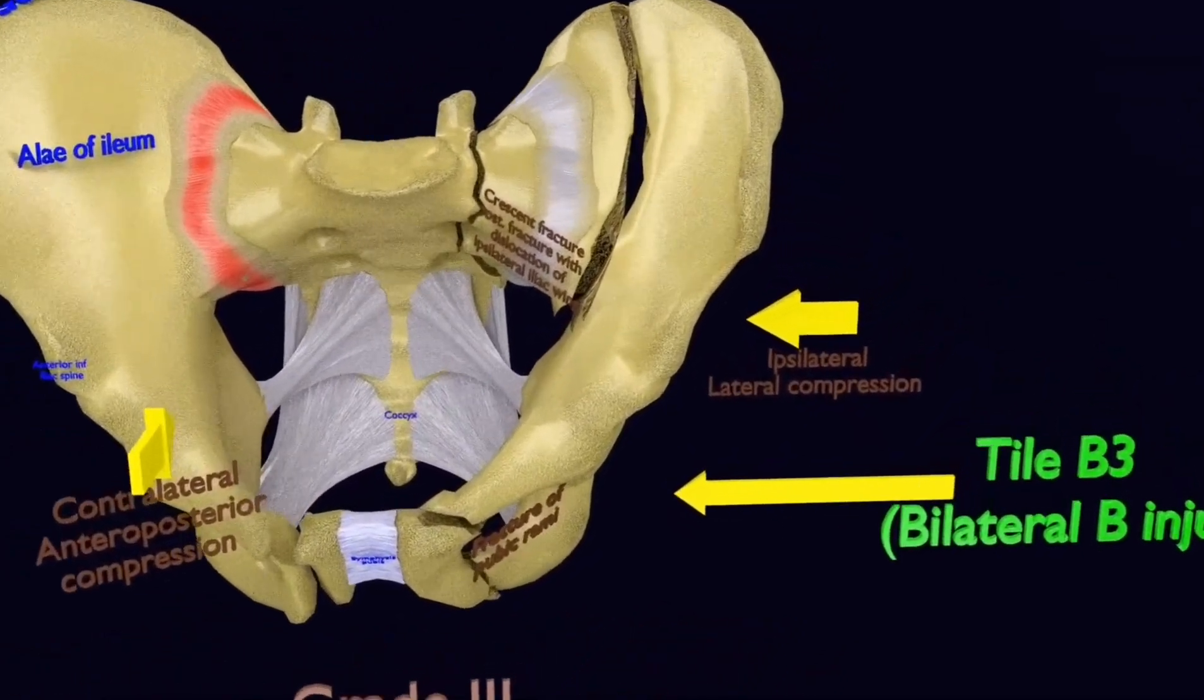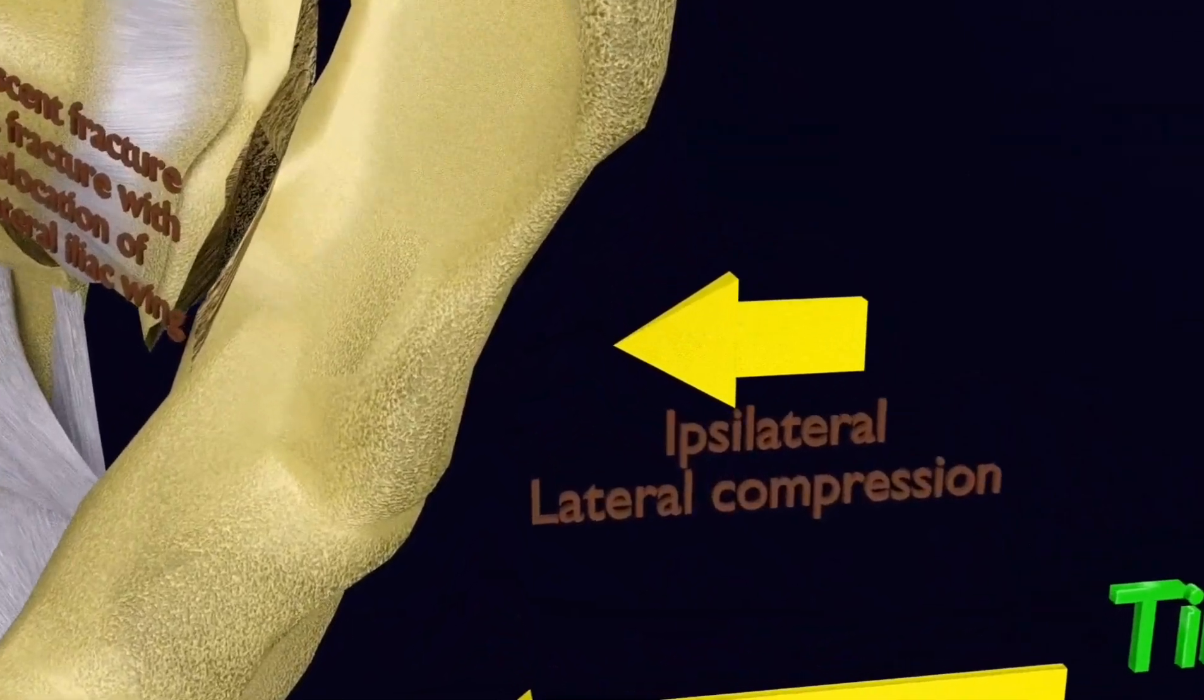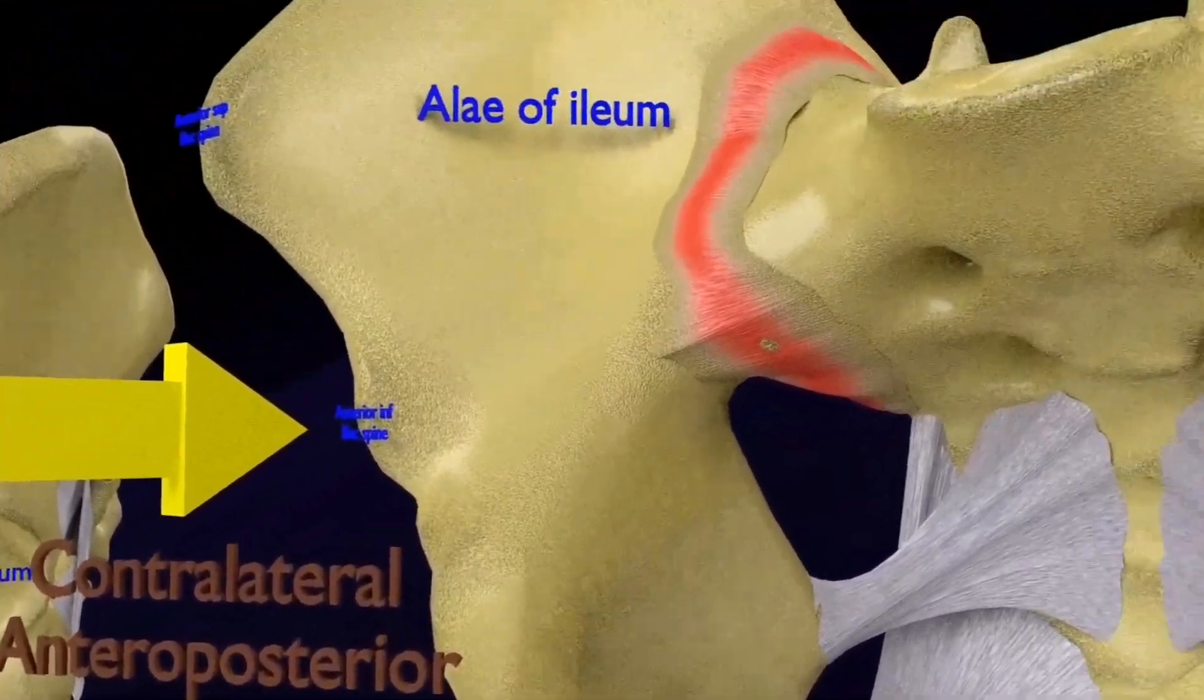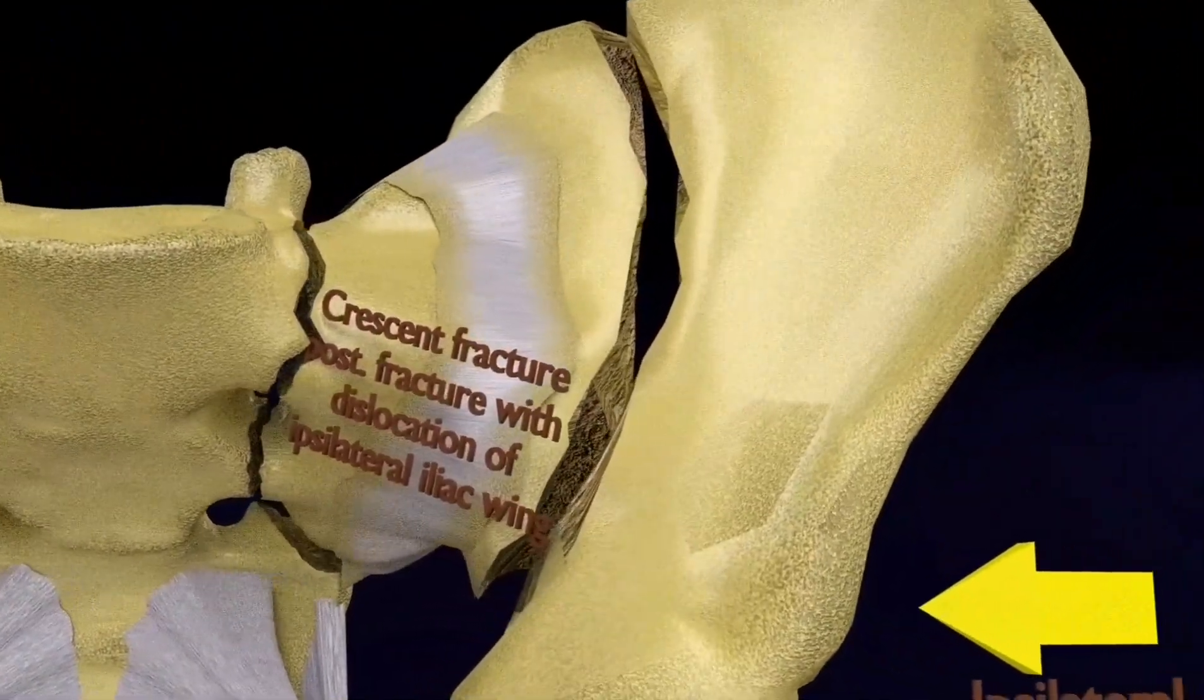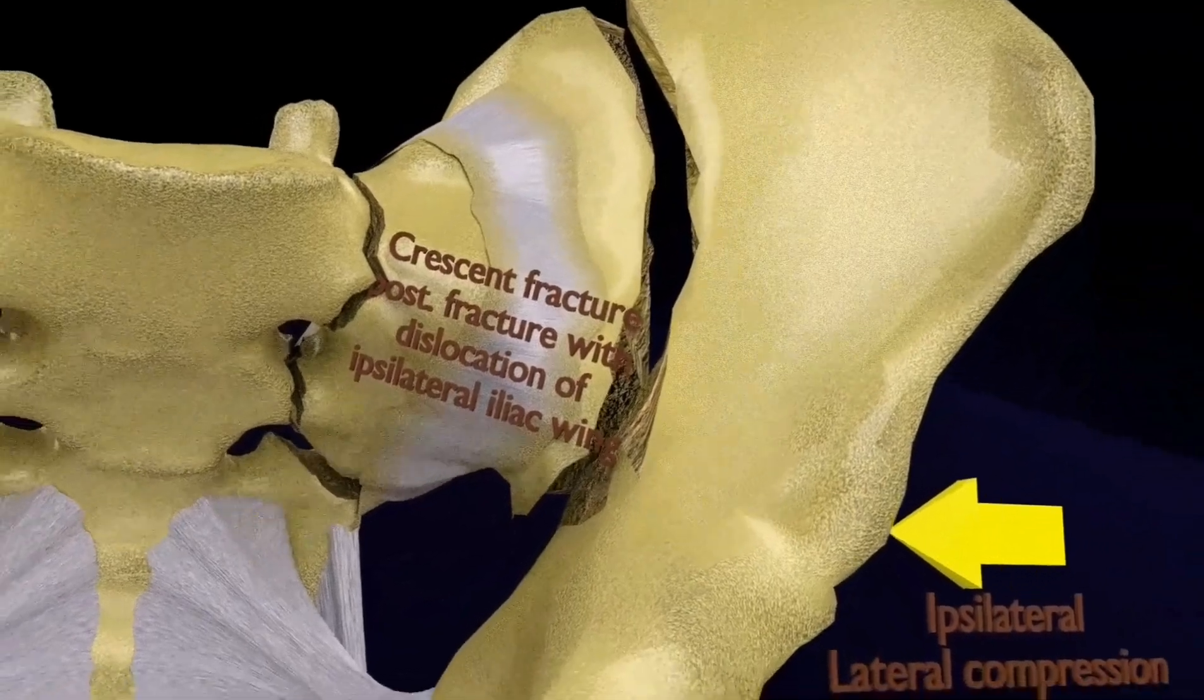This fracture includes both lateral compression fractures and anterior posterior fractures. The anterior posterior compression is contralateral to the lateral compression fracture. The anterior posterior compression fracture is unilateral type B1.